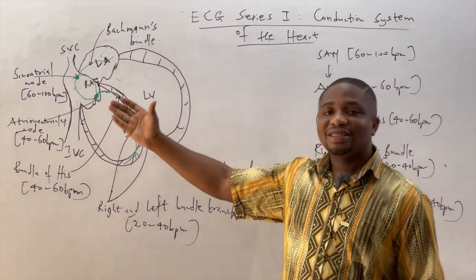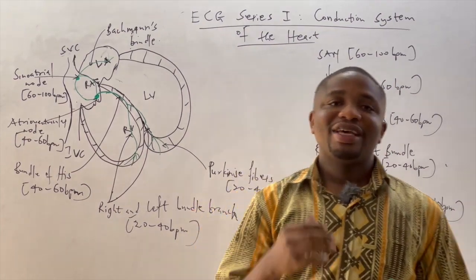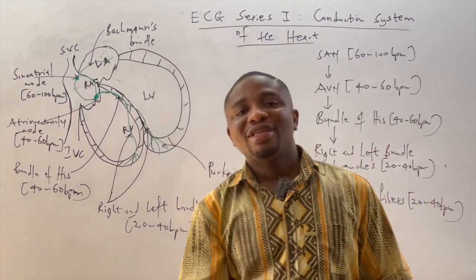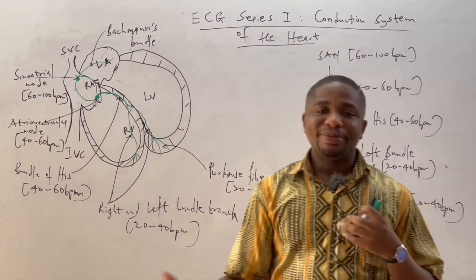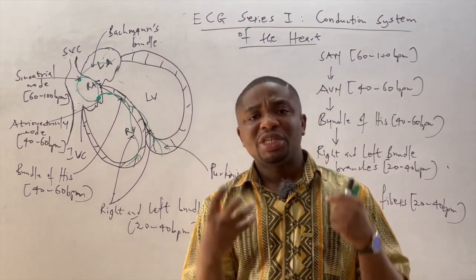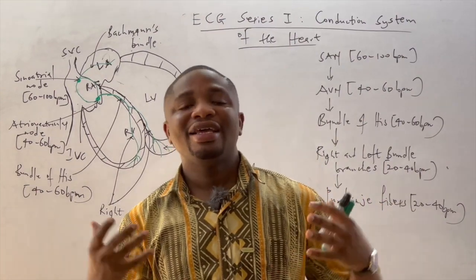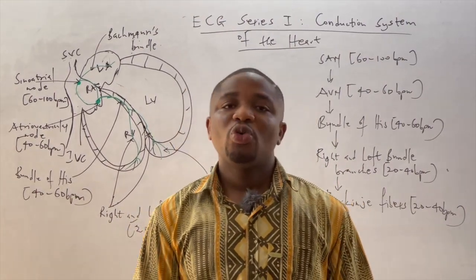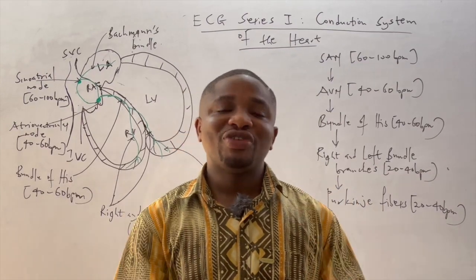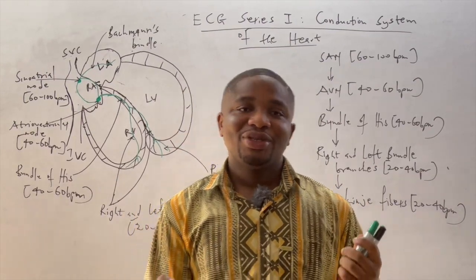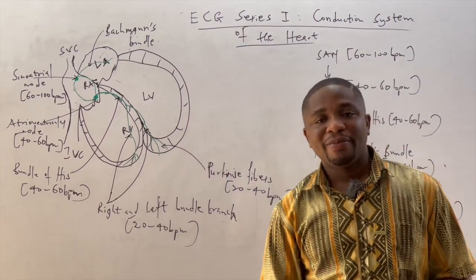The conduction system of the heart is made up of the cardiac muscles and the conduction fibers, meaning that there is a generation of electrical impulses by the conduction fibers which are then transmitted through the cardiac muscles for them to contract.